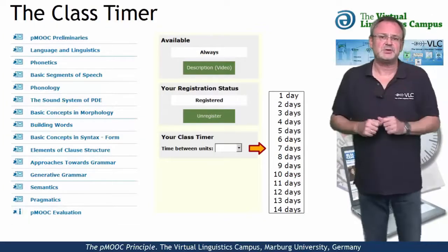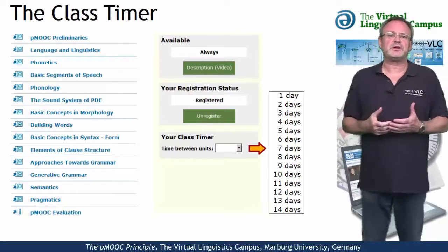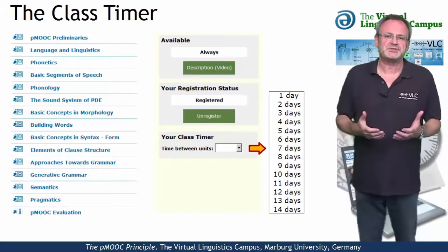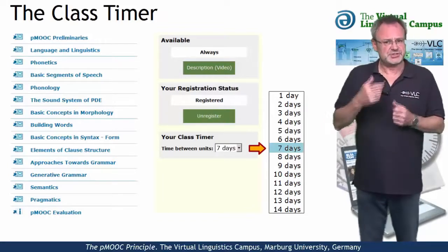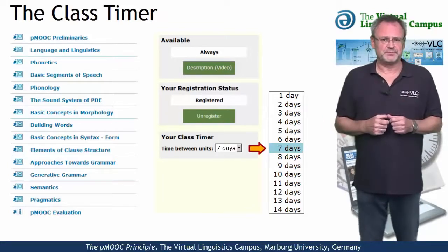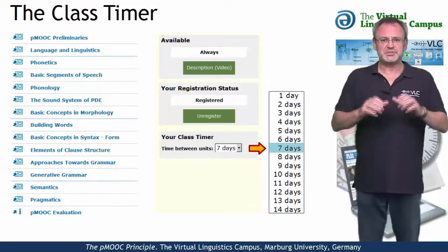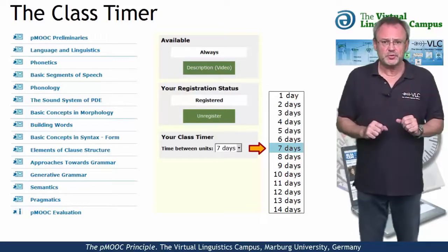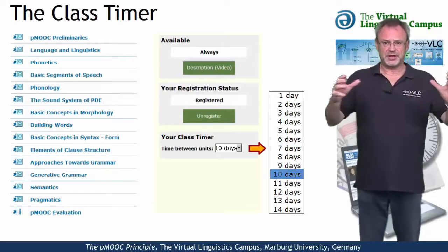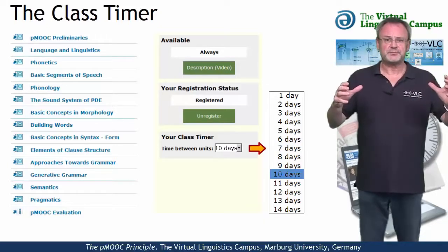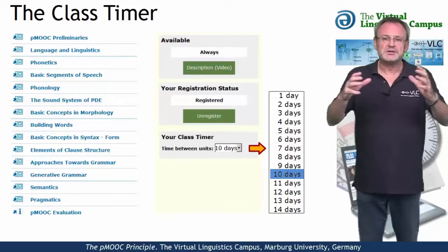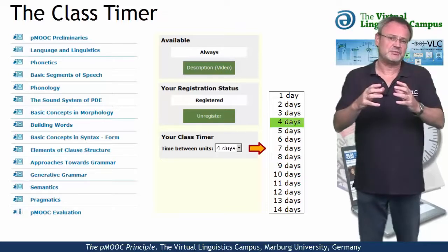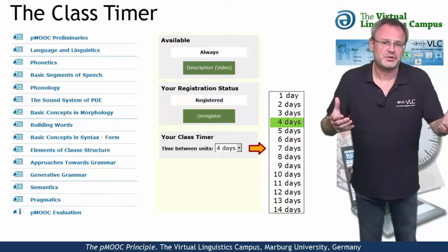For example, if you want to go through the class on a weekly basis, select the 7-day rhythm. If that is too short for you, go for the 10-day rhythm. If it's too long, select a 4-day rhythm.